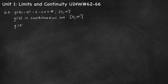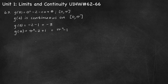Let's check our endpoints: g of 0 and g of pi. At g of 0, we have 0 squared minus 2 minus cosine of 0; cosine of 0 is 1, so g of 0 is negative 3. For g of pi, we have pi squared minus 2 minus cosine of pi; cosine of pi is negative 1, so we're subtracting negative 1, giving pi squared minus 1. We want to know if g has a zero between 0 and pi. That value 0 is indeed between negative 3 and pi squared minus 1, so negative 3 is less than 0, which is less than pi squared minus 1.